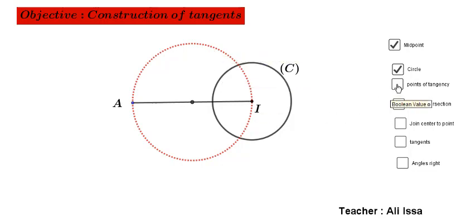Step number 3. Mark and name M and N the points of intersection between the original circle C and the new circle. Step number 4.